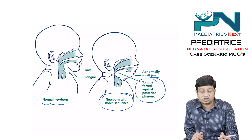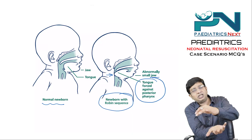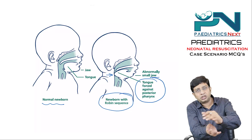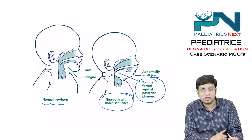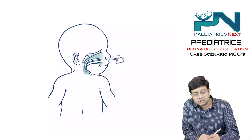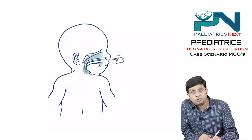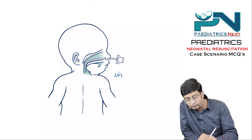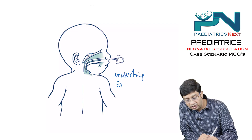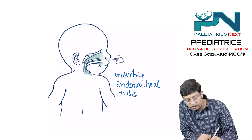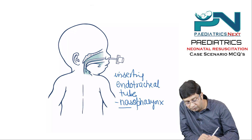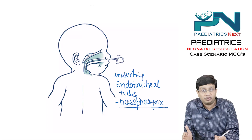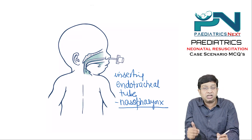The simple management is to keep the child in prone position — the tongue will fall forwards and the obstruction will be relieved. Alternatively, you can insert an endotracheal tube through the nose into the nasopharynx. With the tube in the nasopharynx, the upper airway obstruction will be relieved and the child's respiratory distress will decrease.